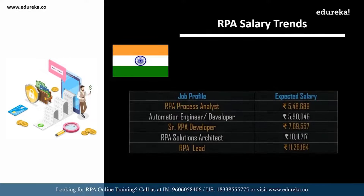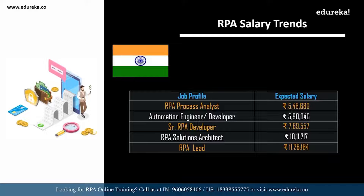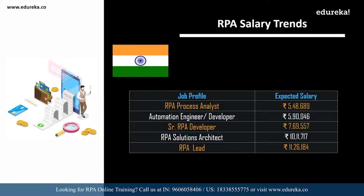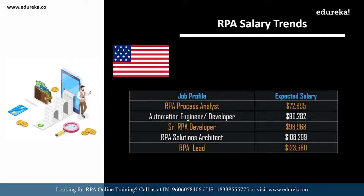Looking at other related job roles in India according to Indeed.com: an RPA process analyst can expect around 5 lakhs 48,000 per annum; an automation engineer or automation developer around 5 lakhs 90,000; a senior RPA developer around 7 lakhs 69,000; an RPA solutions architect around 10 lakhs 11,000; and an RPA lead around 11 lakhs 26,000.